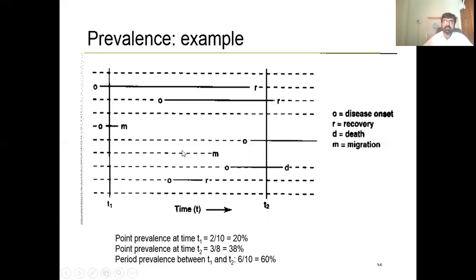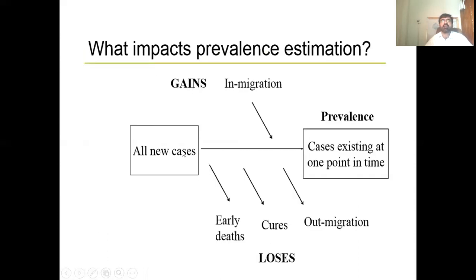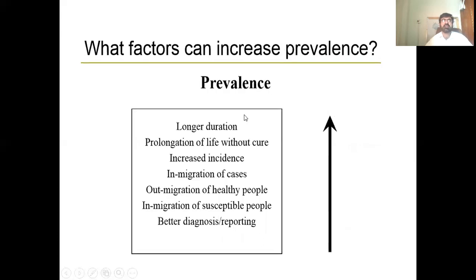What impacts prevalence estimates? New cases and in-migration will increase prevalence. Early deaths, cures, and out-migration will decrease prevalence. Cases existing at one point in time can be gained through in-migration, and losses include cures, early deaths, and out-migration, all of which decrease prevalence.